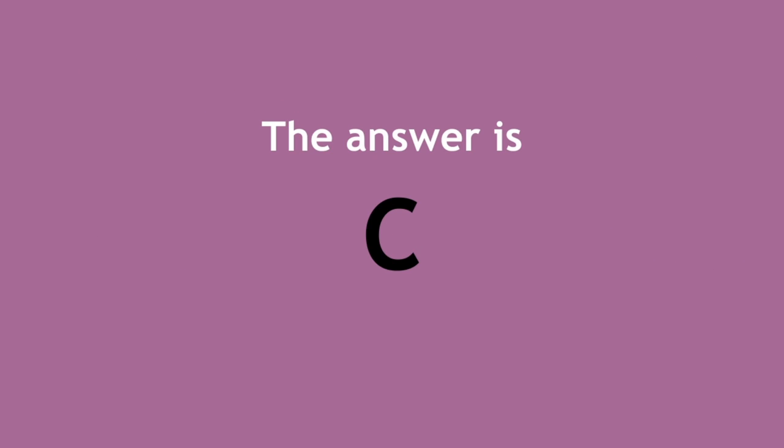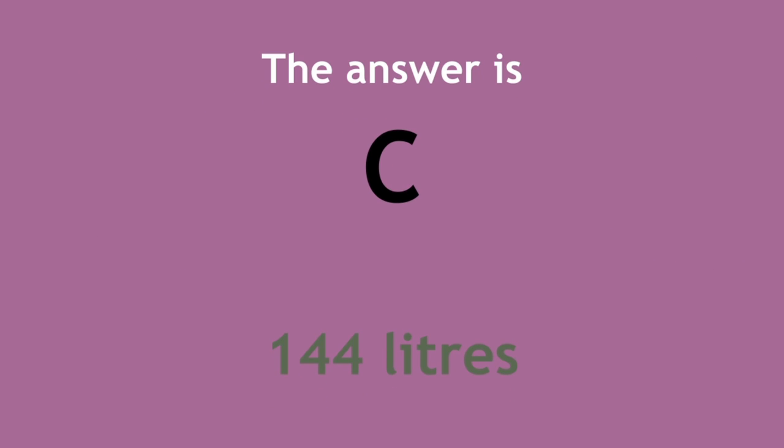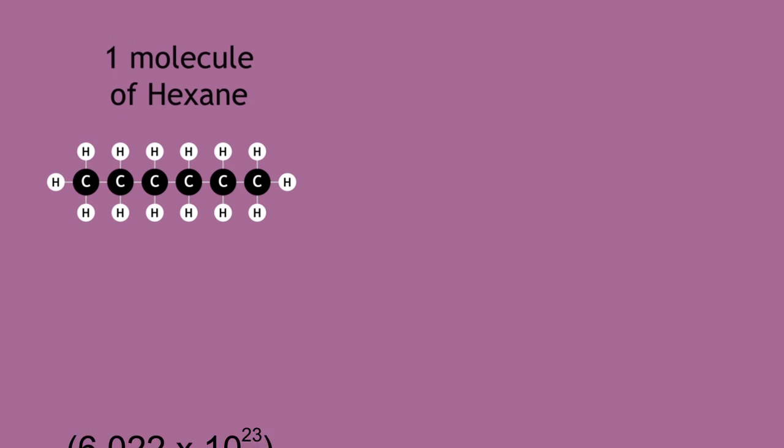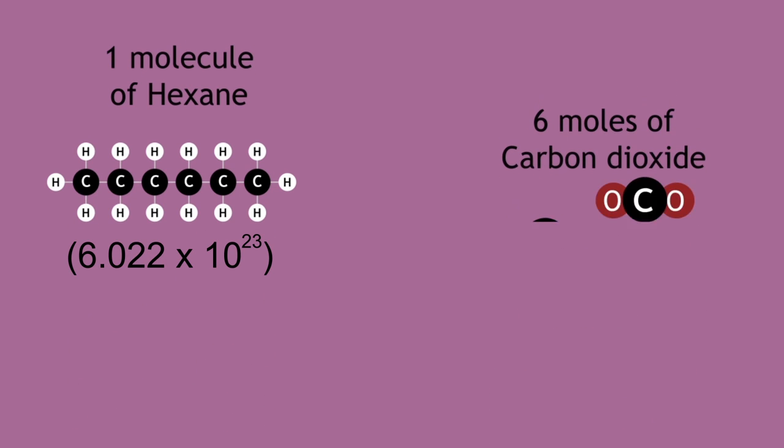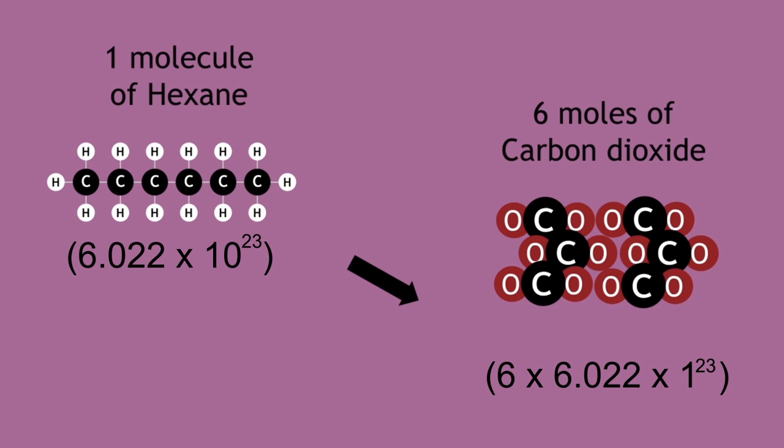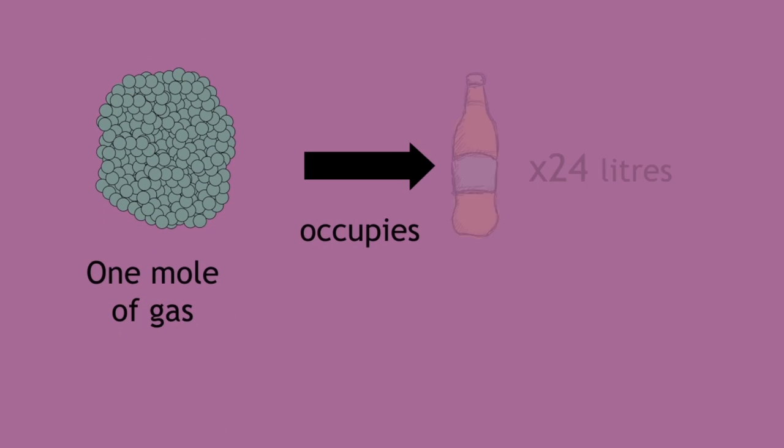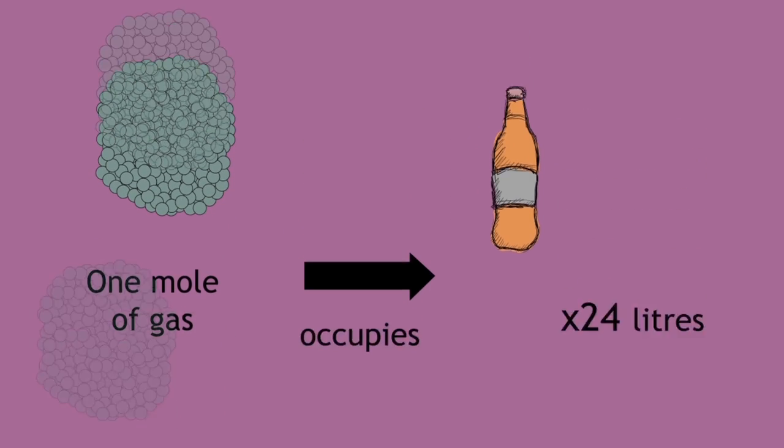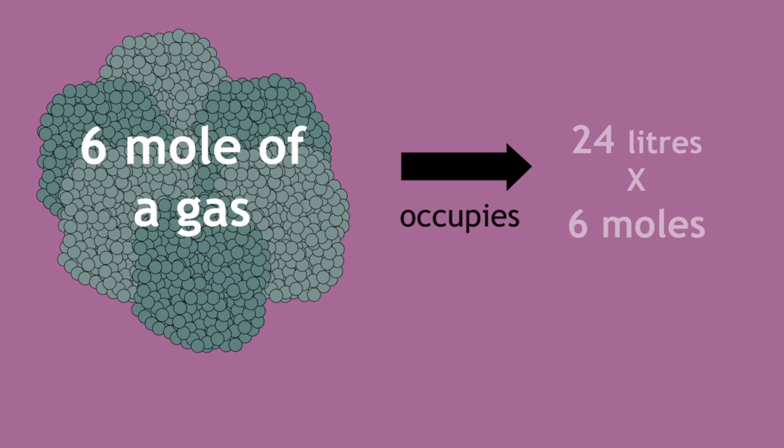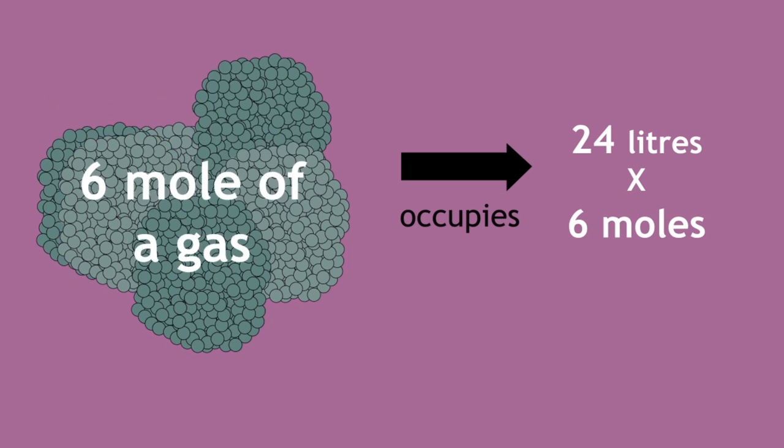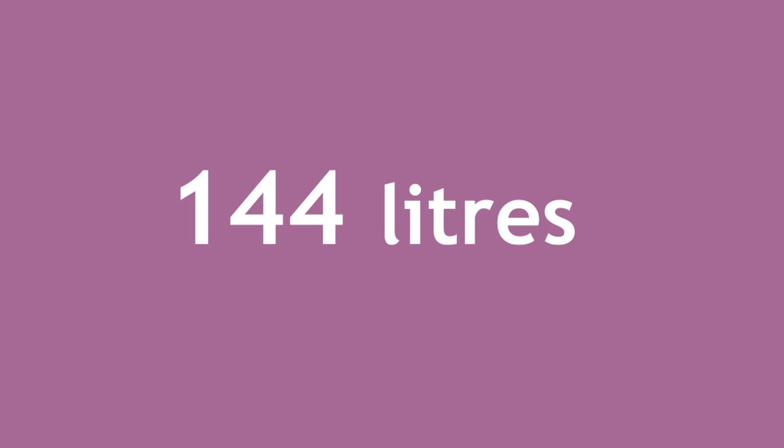The answer is C, 144 litres. This is because one mole of hexane produces six moles of carbon dioxide. So, if one mole of a gas occupies 24 litres, then six moles of a gas occupy 24 litres times six, which equals 144 litres.